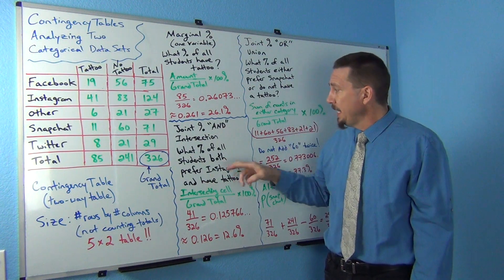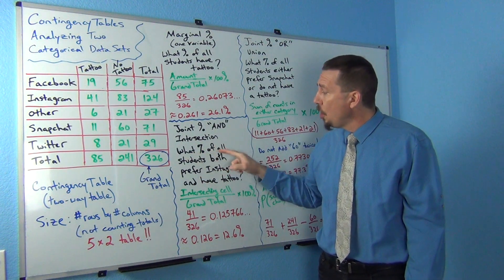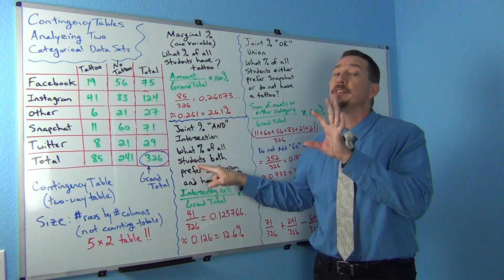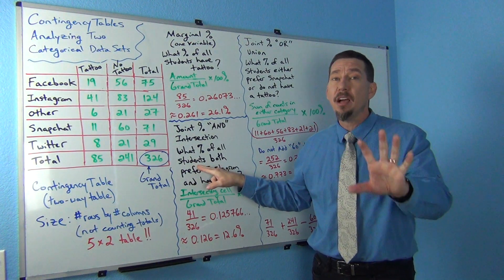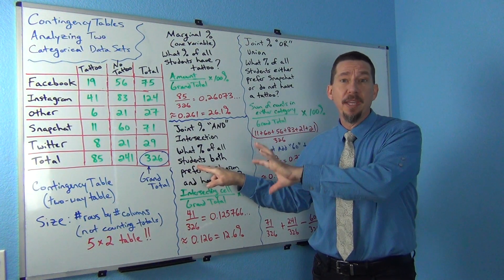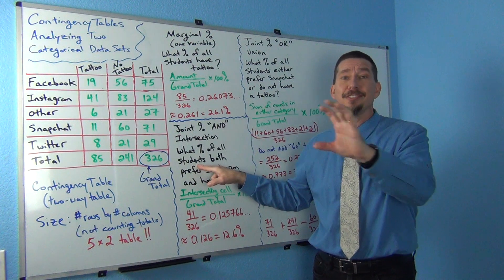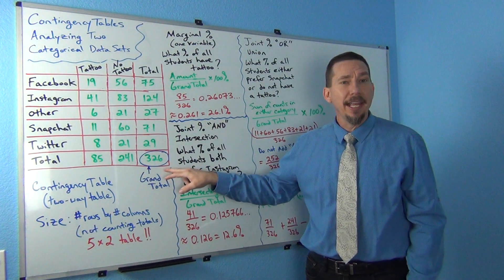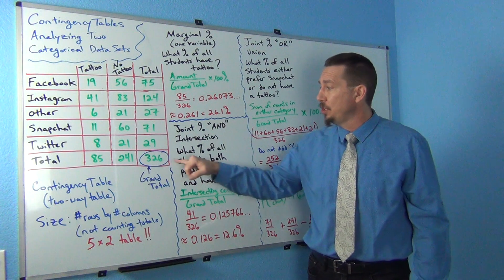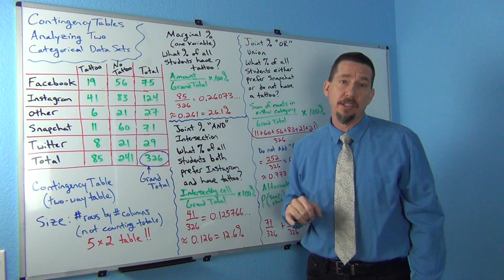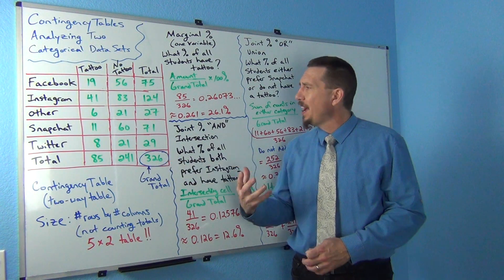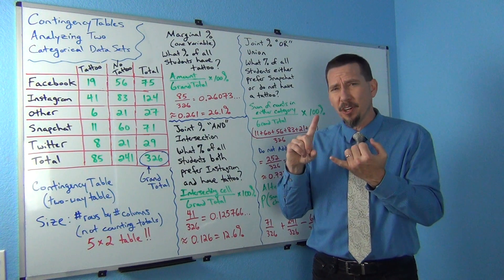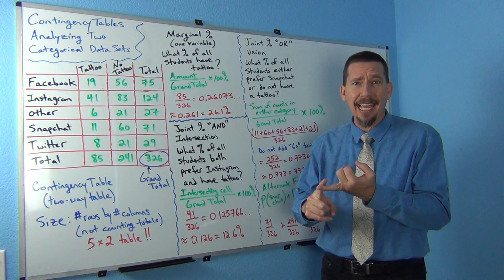Again, they said what percentage of all students. Remember, 'of' refers to the total. So if it says of all the people, or of all the dogs, or of all the cats, we're going to use the grand total. So we should be using the grand total as our total. But where am I going to find the people that both prefer Instagram and have a tattoo?